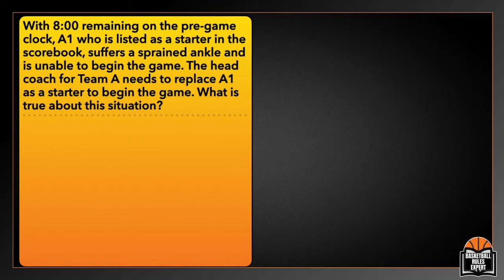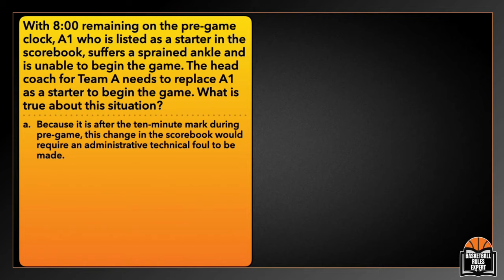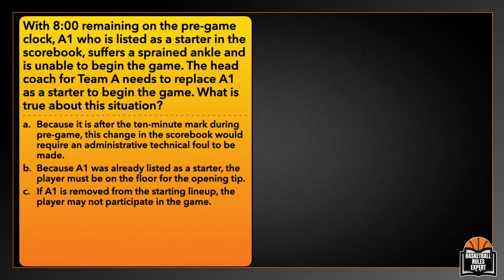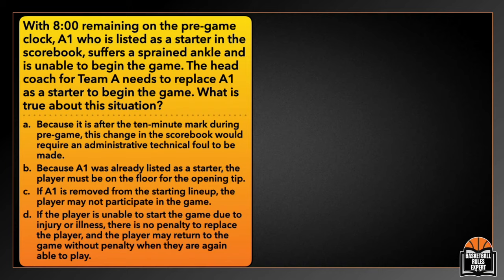Next question: With eight minutes remaining on the pregame clock, A1, who is listed as a starter in the scorebook, suffers a sprained ankle and is unable to begin the game. The head coach for Team A needs to replace A1 as a starter. What is true? A — because it is after the 10-minute mark, this change would require an administrative technical foul. B — because A1 was already listed as a starter, the player must be on the floor for the opening tip. C — if a player is removed from the starting lineup, they may not participate in the game. Or D — if the player is unable to start due to injury or illness, there is no penalty to replace the player, and the player may return when able.